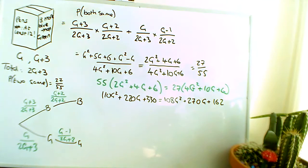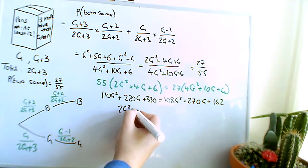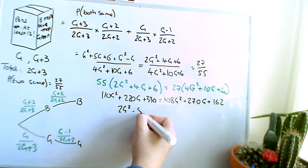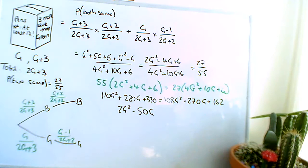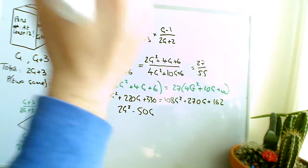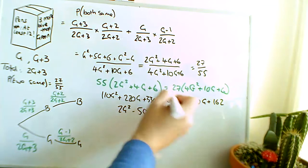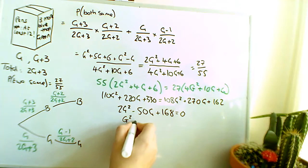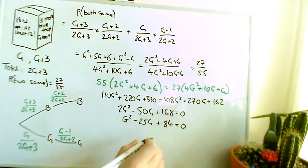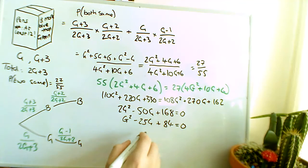This is just a quadratic now, get everything all onto one side. So we've got 110 G squared subtract 108 G squared is going to be 2 G squared, 220 G subtract 270 G is going to be minus 50 G, and 330 subtract 162 is going to be 168, so plus 168 equals 0. Divide everything by 2 here, so we did manage to do that in the end, G squared minus 25 G plus 84 equals 0. Now I've got a quadratic to solve, I'm just going to skip ahead with this one.